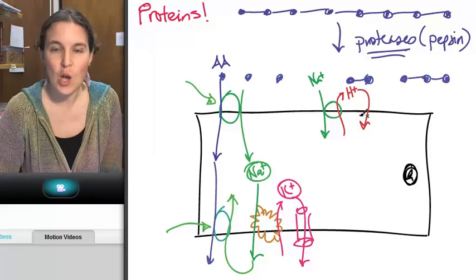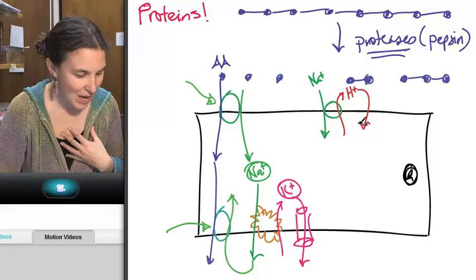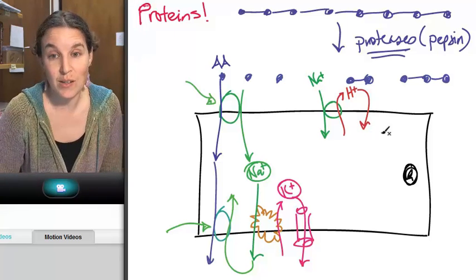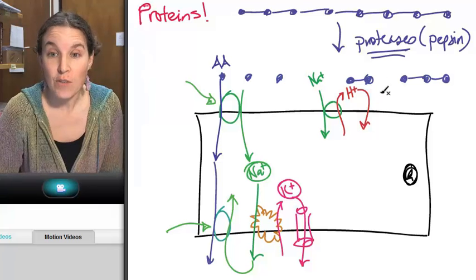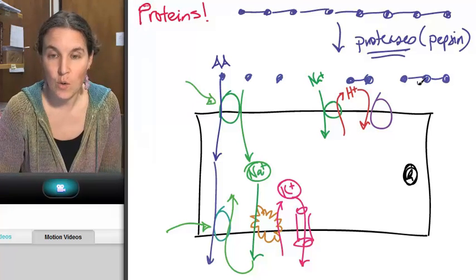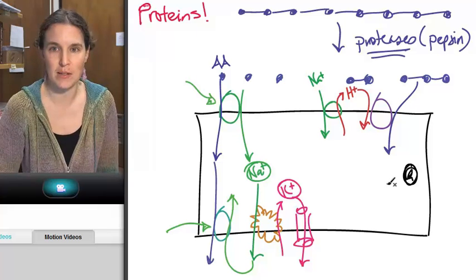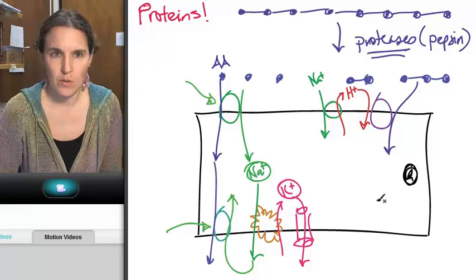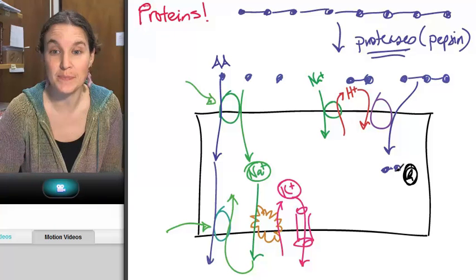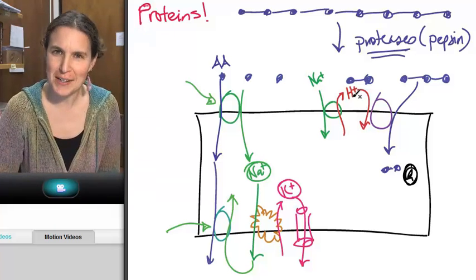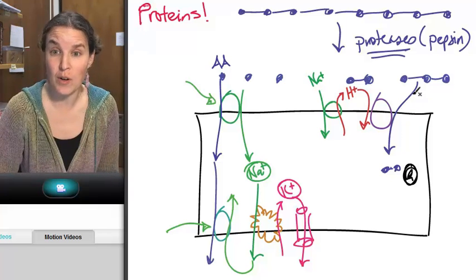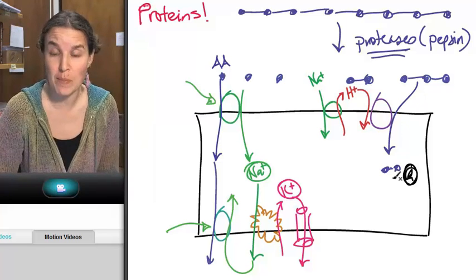Guess what happens? We're actually going to allow that guy back in. But in order to get back in, we're saying, dude, you got to do a little bit of work for us. If you want back in, you're going to have to bring one of these dipeptides or tripeptides, you're going to bring those guys in. We pump the hydrogen ion out. So, the hydrogen ion comes back in using this new transporter that allows the di or tripeptides to come in.